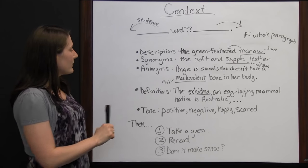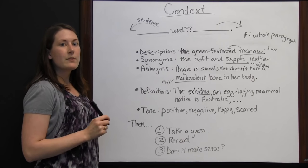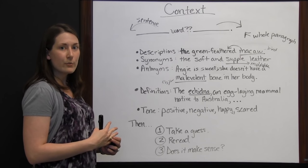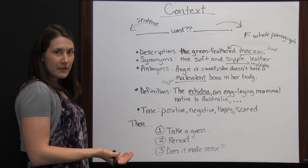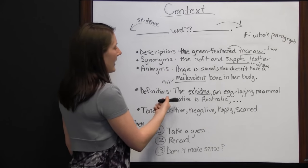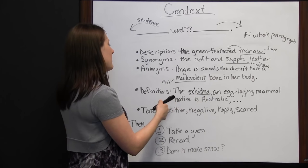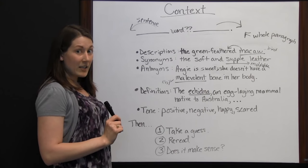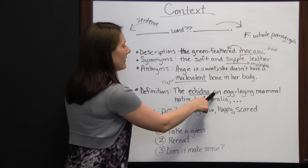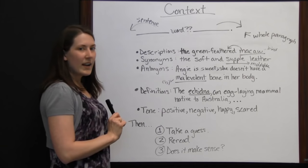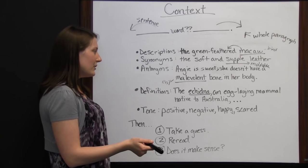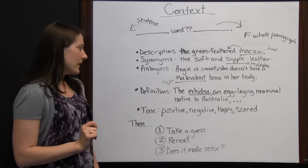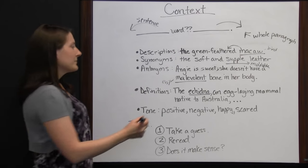Another clue you can look for are definitions. Sometimes the sentence before, after, or part of the same sentence will just give you the definition of the word. For instance: 'The echidna, an egg-laying mammal native to Australia…' Right there in the commas, after 'echidna,' is the definition — an egg-laying mammal native to Australia. So you know what it is right there.